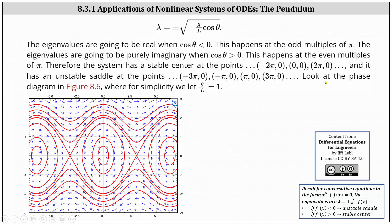Below we have the graph of the phase diagram where, for simplicity, g divided by l is equal to one. Notice we do have stable centers at negative two pi comma zero, zero comma zero, and two pi comma zero, and we have unstable saddle points at negative pi comma zero and pi comma zero.